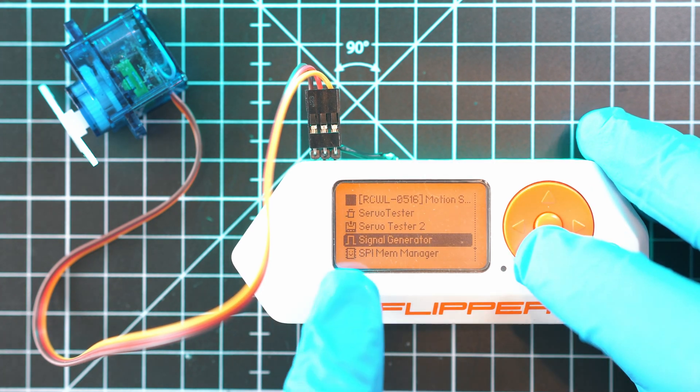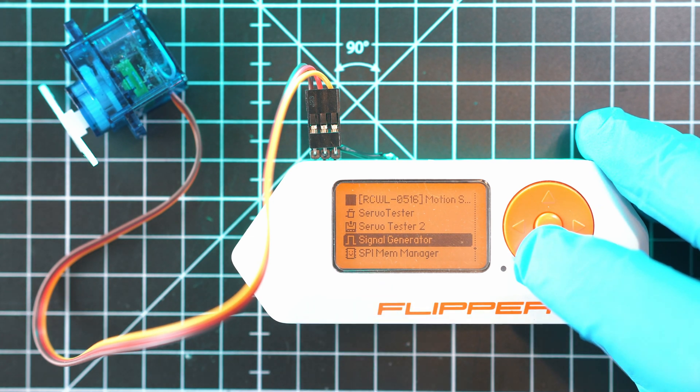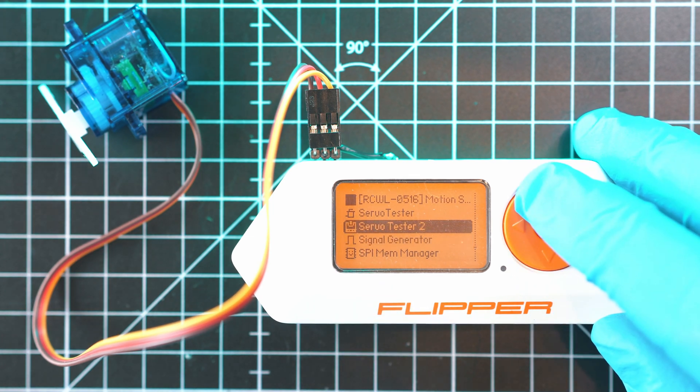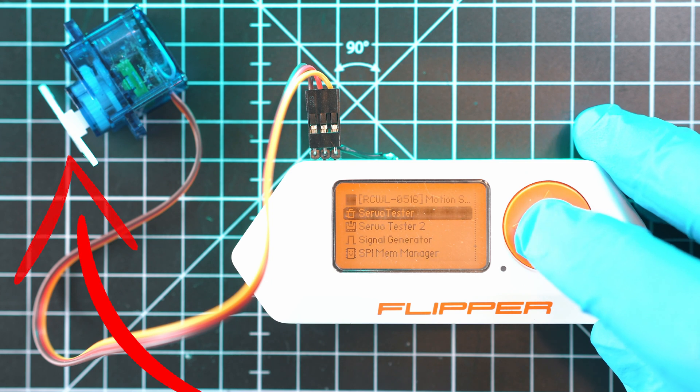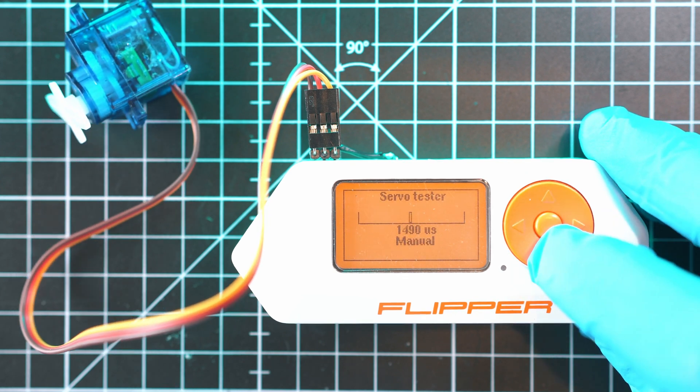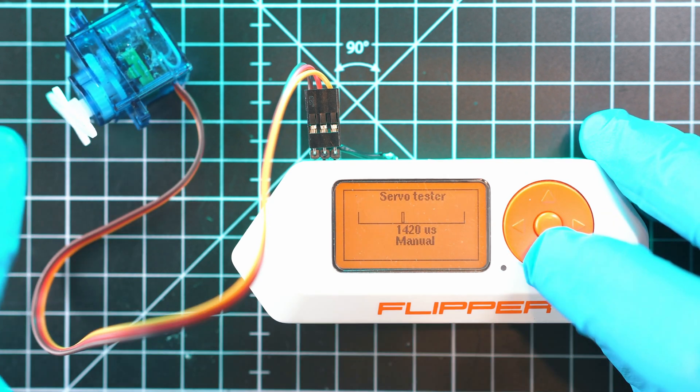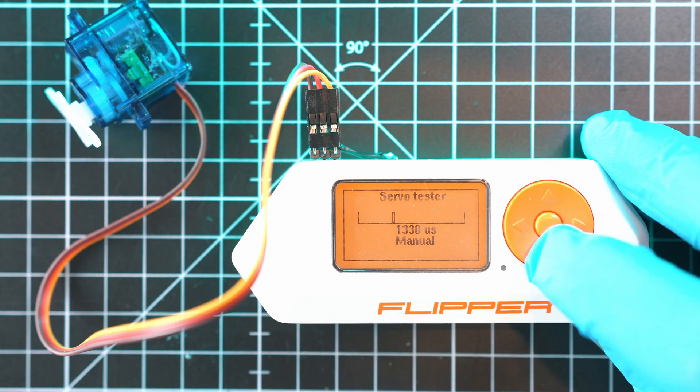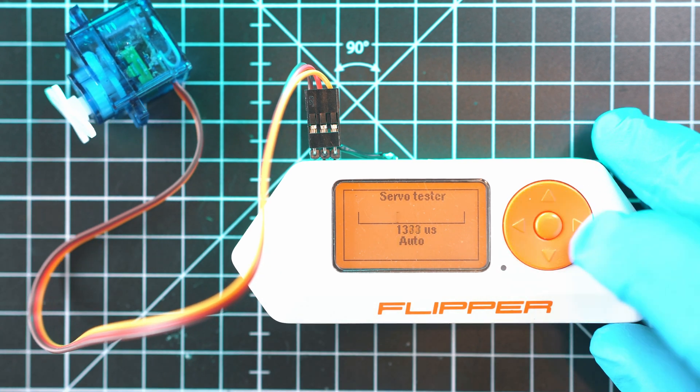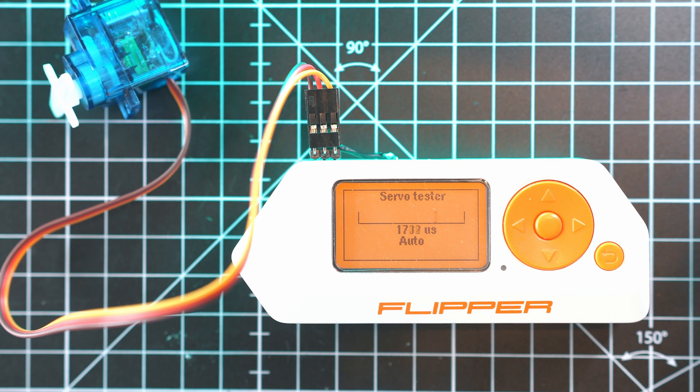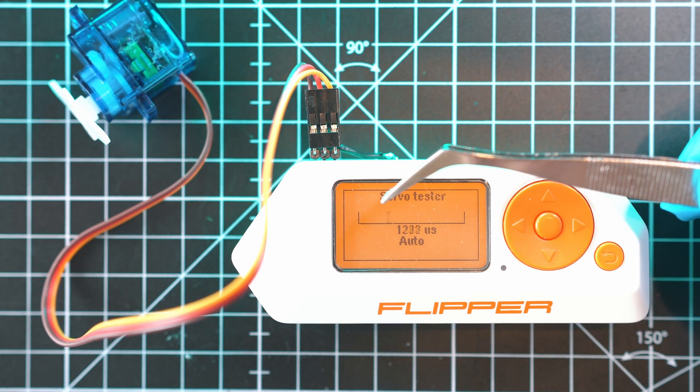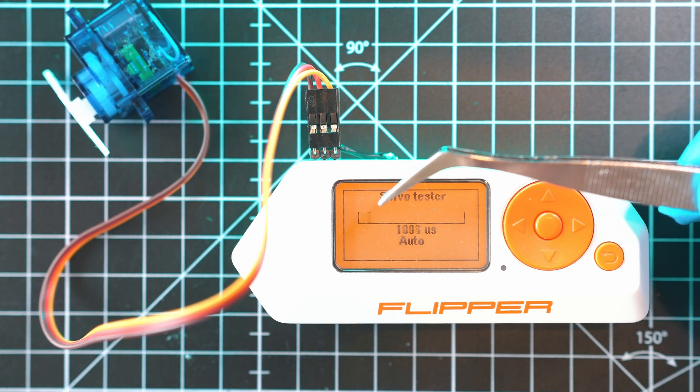I have also seen testing servos with signal generator. But it is more complicated. So, servo tester and servo already moved. And manually we can control servo with arrows. Center button will test servos automatically. This little thing is representing actual servos position.